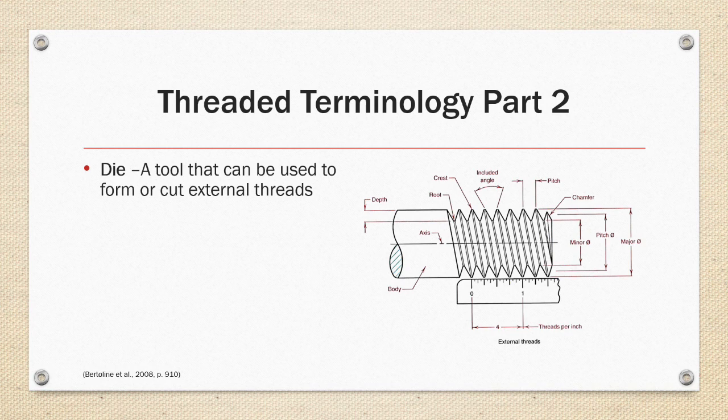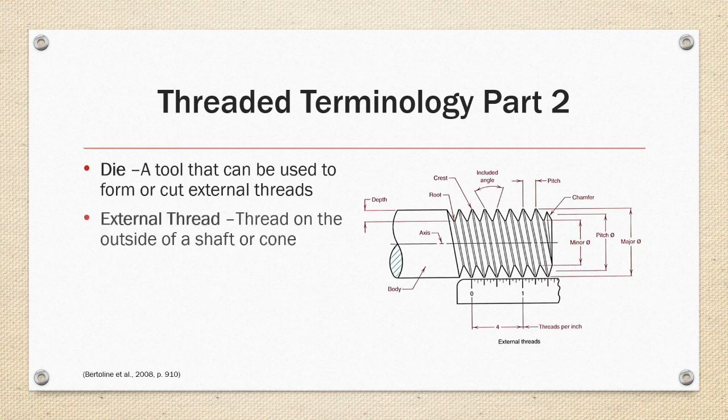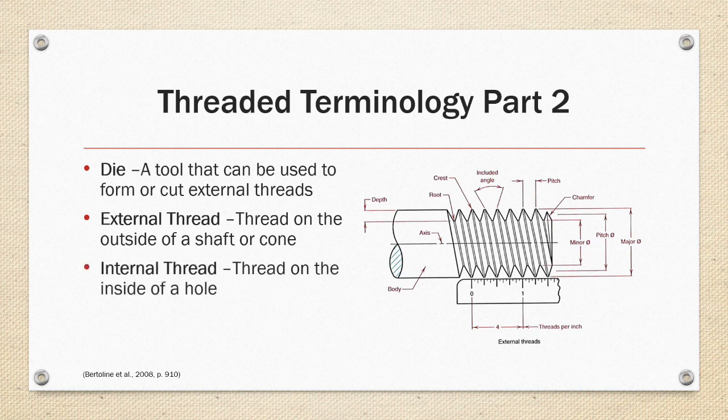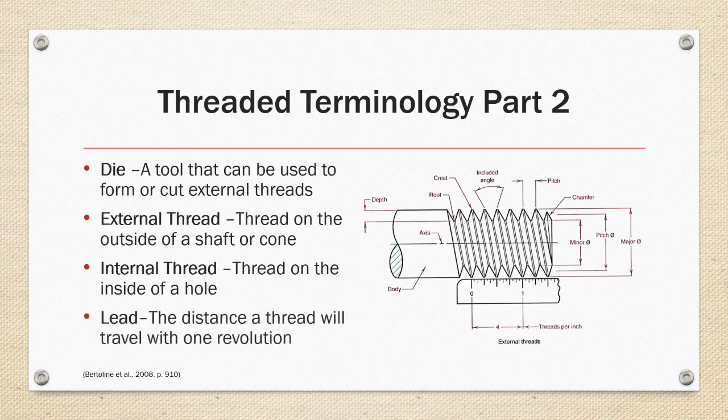Part two. A die is a tool that can be used to form or cut external threads. An external thread is on the outside of a shaft or a cone. An internal thread is on the inside of a hole or a bore. Lead is the distance a thread will travel with one revolution.